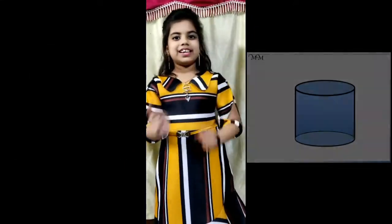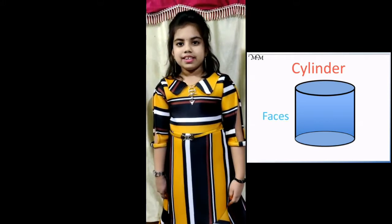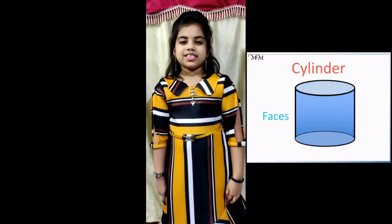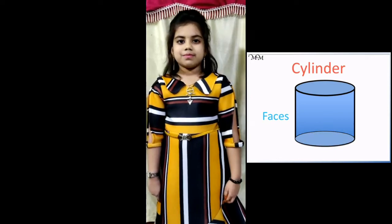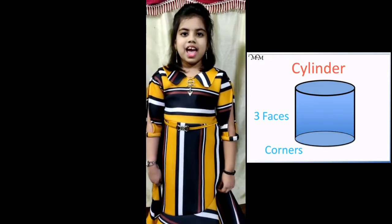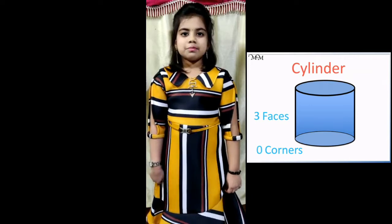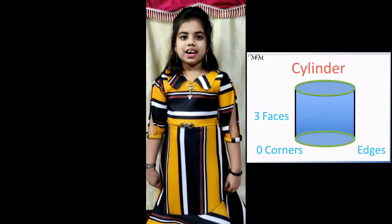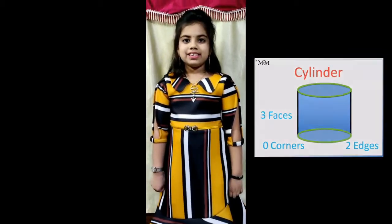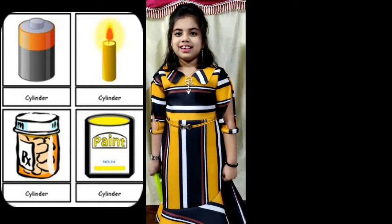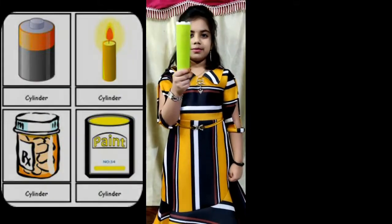The third one is a cylinder. A cylinder has 3 faces — 2 flat faces and 1 curved face. The flat surfaces are circles of the same size. These flat surfaces meet the curved surface at circular edges. Examples of a cylinder are a gas cylinder and a torch light.